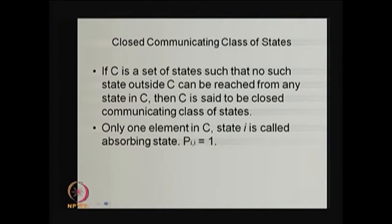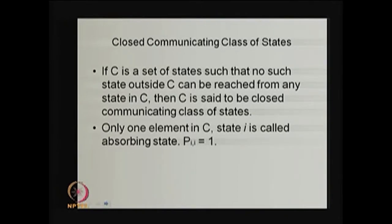Before we discuss the reducible Markov chain, let me explain the closed communicating class of states — a definition we have already given in earlier lectures. We are using this to conclude whether a Markov chain is reducible or irreducible. Suppose you collect a set of states labeled C. That set is called a closed communicating class of states if no state outside C can be reached from any state in C.